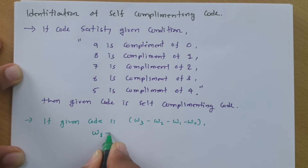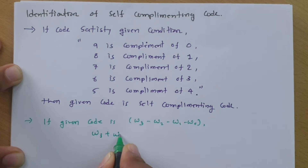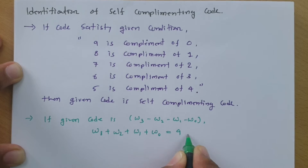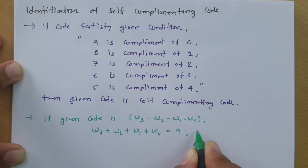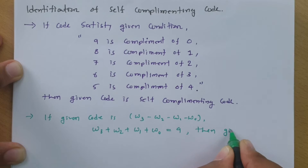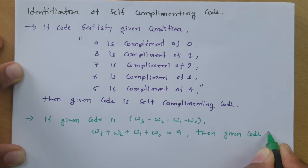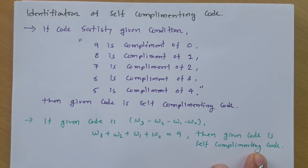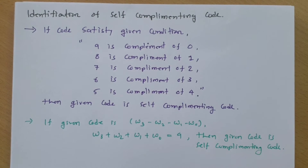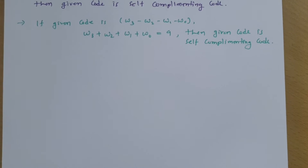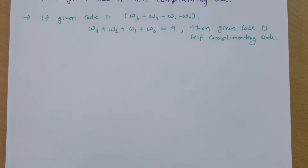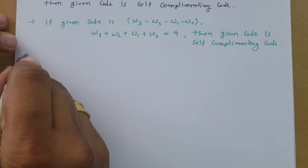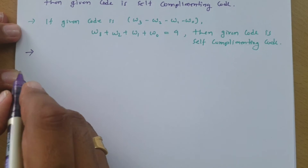Here we need to do addition of all 4-bit weightages. If the addition of all 4-bit weightages equals 9, then we can say the given code is a self-complementing code. That is how we can identify it. Let us have a few examples so you will get to know how we can identify those examples — I will show you some codes step by step.